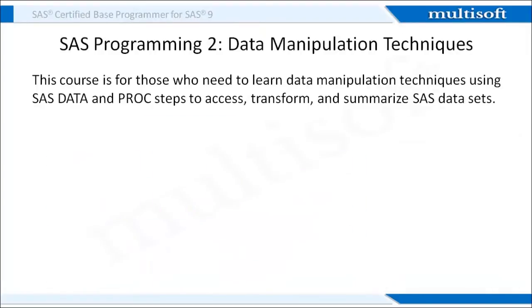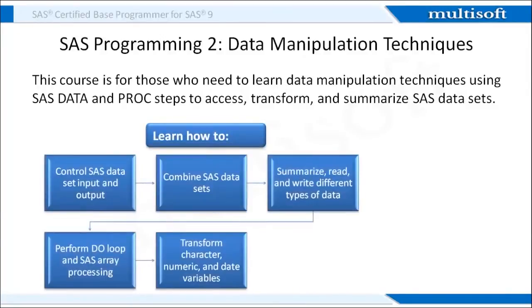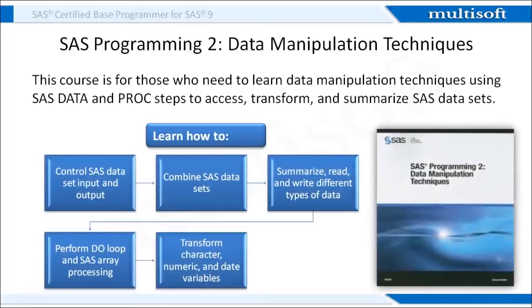The second course book, SaaS Programming 2 Data Manipulation Techniques, is for those who need to learn data manipulation techniques using SaaS data and PROC steps to access, transform, and summarize SaaS datasets. Here you will learn how to control SaaS dataset input and output, combine SaaS datasets, summarize, read and write different types of data, perform do-loop and SaaS array processing, and transform character, numeric, and date variables.